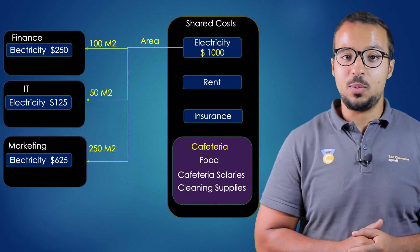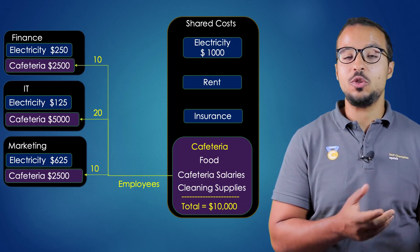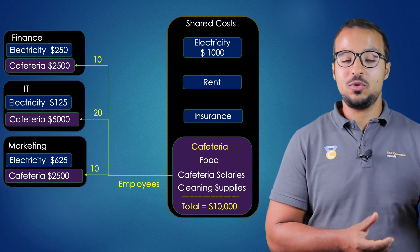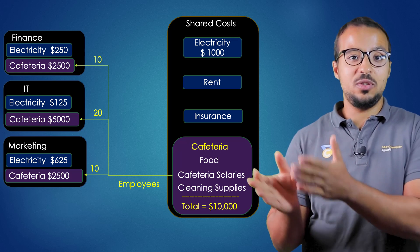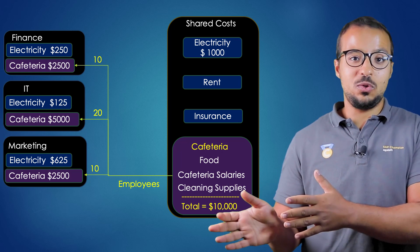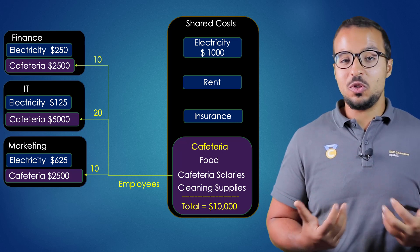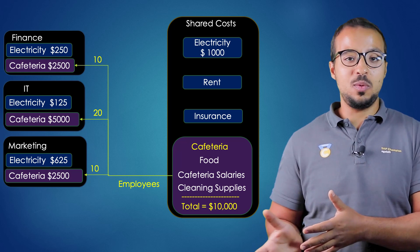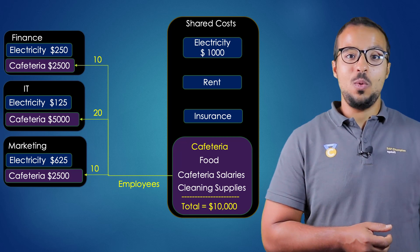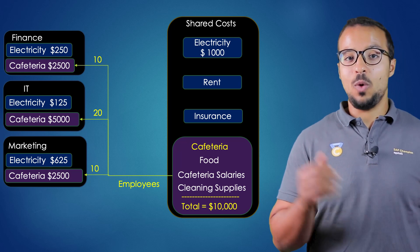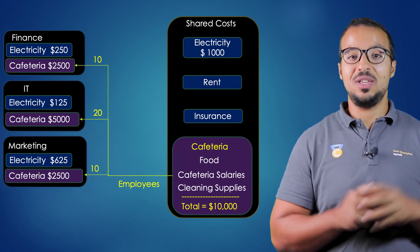For cafeteria expenses, we have many line items: food, cleaning, cafeteria supplies, and so on — all available as cost elements in the shared expenses cost center. However, in the receiving cost centers, managers don't want to see all those details. They only want to see one summarized line item called 'cafeteria expenses.' In this case, we use overhead allocation and secondary cost elements.